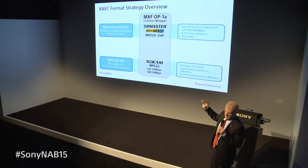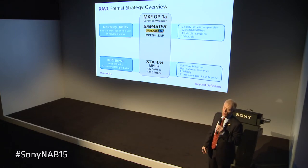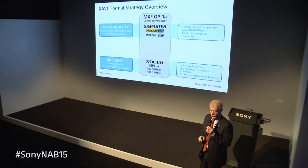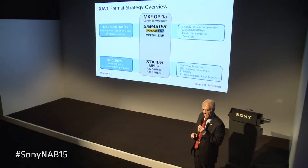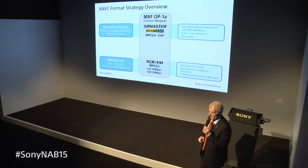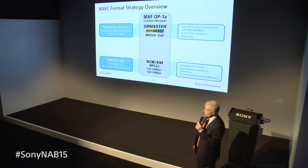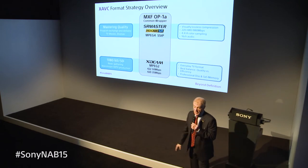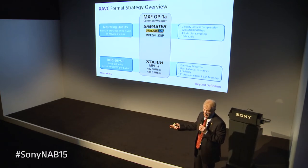On the other scale, we have mastering formats. The HDCAM SR was the VTR we made — until recently a contribution master among cinematographic studios. It produces spectacular picture quality up to 1920x1080 at up to 60 frames per second, with data rates going all the way to 880 megabits per second, RGB 12-bit. This is a mastering format.